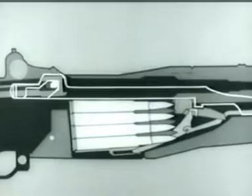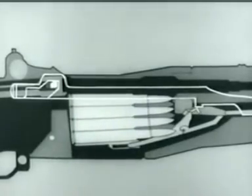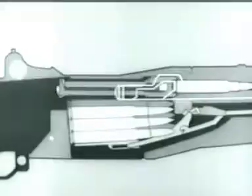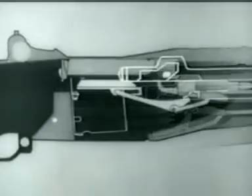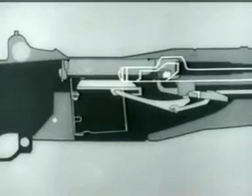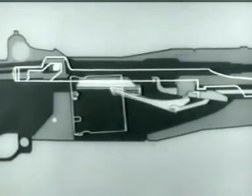Meanwhile, the follower moves up, pushing the next cartridge into position. The operating rod and bolt move forward. The cartridge is stripped from the magazine, seated, and the bolt is locked.